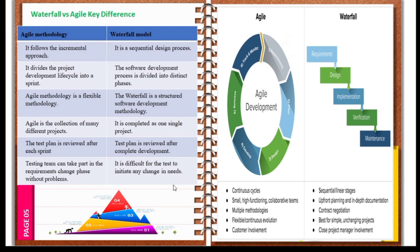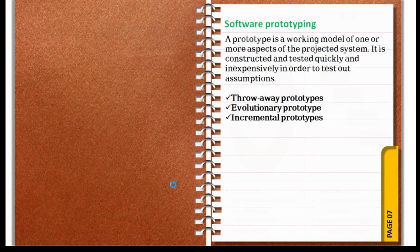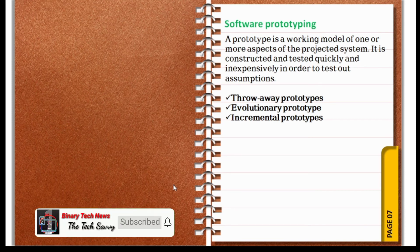Agile uses a SCRUM procedure and tools. It also involves working with a prototype — a working model of one or more aspects of the projected system, which is constructed and tested quickly and inexpensively in order to test out assumptions. This is referred to as a software prototype.